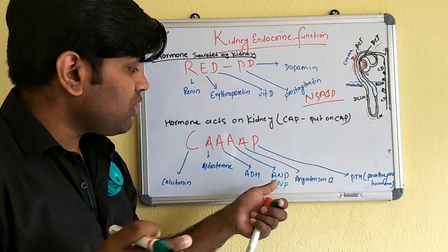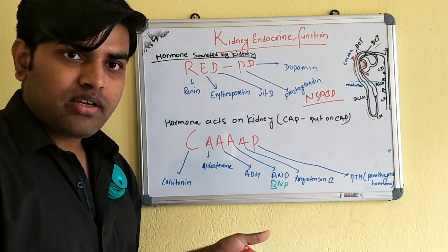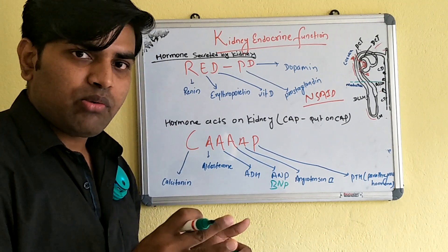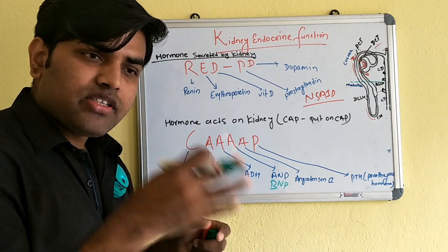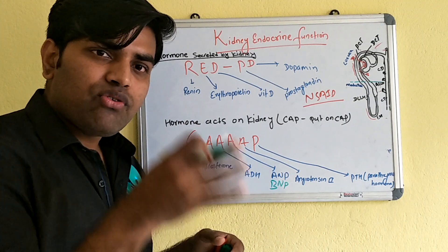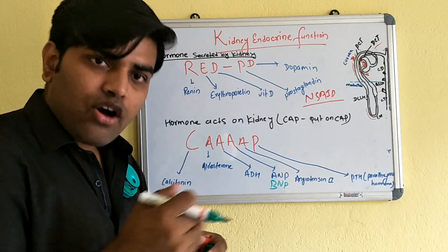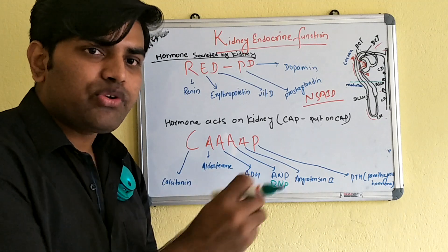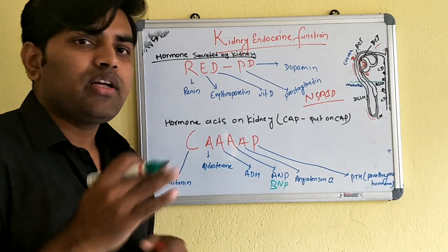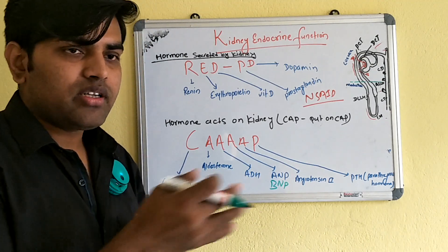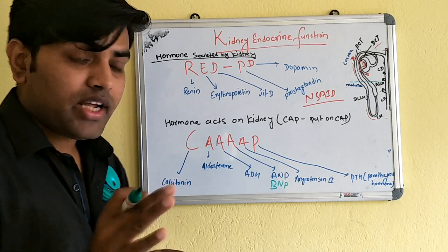In summary, ANP and BNP are released from the heart due to volume overload. In the kidney, they increase blood flow, GFR, and filtration fraction, and prevent sodium reabsorption in the late collecting tubules — all to correct volume overload.